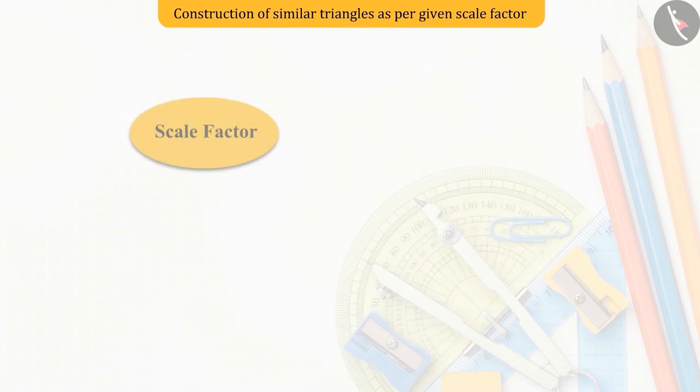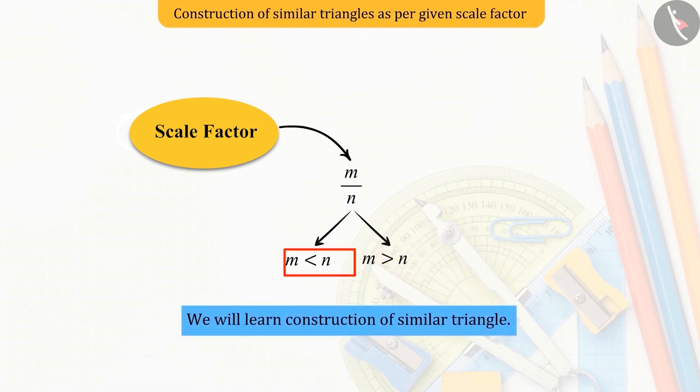Now, if we say that the scale factor between any two similar triangles is M upon N, then two situations arise here. First, when M is less than N and second when M is greater than N. Today, we will learn the construction of similar triangles in the first situation.